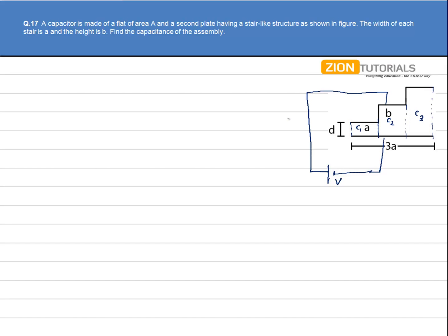Now note that the potential difference across each of the plates C1, C2, and C3 is V. So we can clearly say that the three capacitors are in parallel combination.